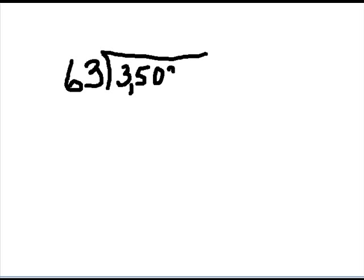Let's say I wanted to do 63 into 3,502. So I'm putting that there. I'm putting this here. And I'm putting my line to the side for my ladder.